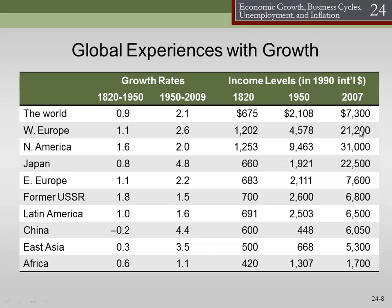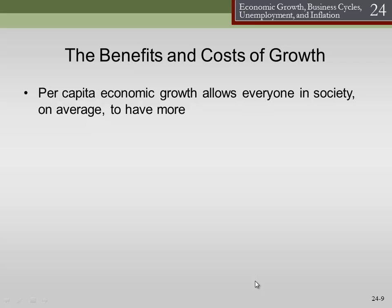What are some benefits and costs of growth? Per capita economic growth allows everyone in society on average to have more. If we have growth, we've got more stuff. But we need to focus on 'on average' — we haven't really dealt with distributional effects yet, because in principles of macro we end up aggregating those effects away.